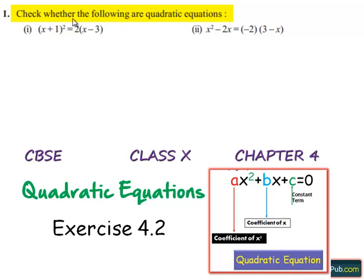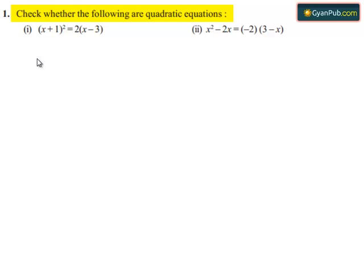Coming to the first problem, check whether the following are quadratic equations. Now coming to the second bit, which is x² minus 2x equals minus 2 times 3 minus x.